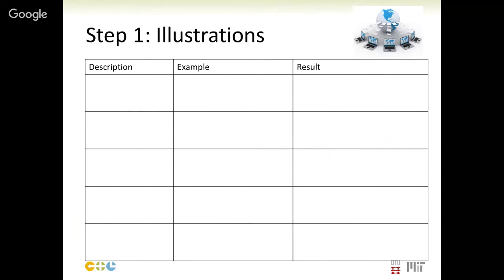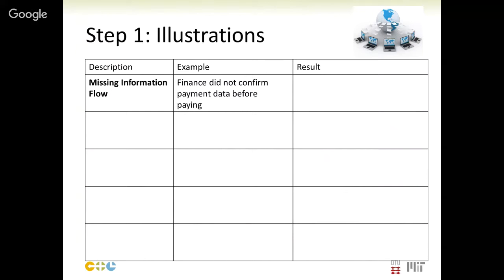Some illustrations of results we can get from this explicit representation: first, we could identify missing information flows. An example is that finance did not confirm payment data before paying a supplier, and the result was that the payment was made to a hacker after supplier data was compromised. We saw examples at the beginning of the presentation where this is fairly common. So there are some fairly common information flows that are missing in organizations.